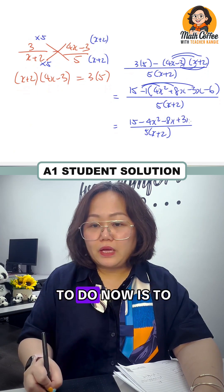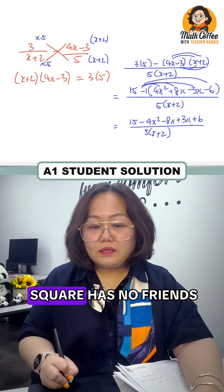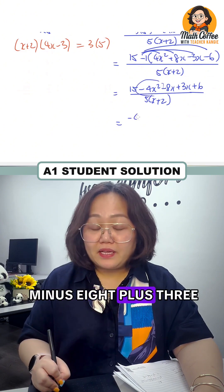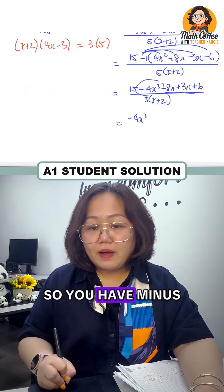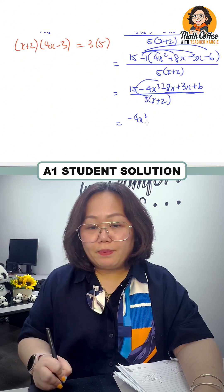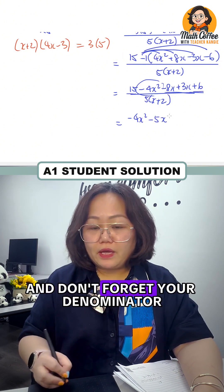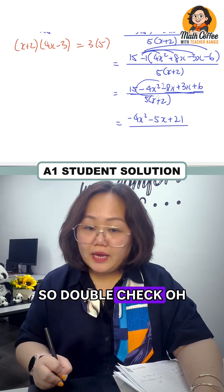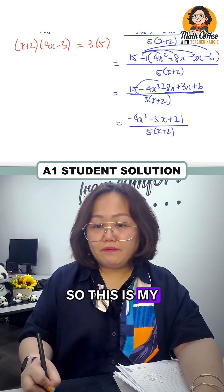Applying the signs carefully: minus 4x², minus 8x, plus 3x, plus 6. Now group like terms. Minus 4x² stands alone. For the x terms: minus 8 plus 3 gives minus 5x. For the constants: 15 plus 6 gives plus 21. Don't forget the denominator in factorized form. Check if it can be further factorized — it cannot, so this is the final answer.